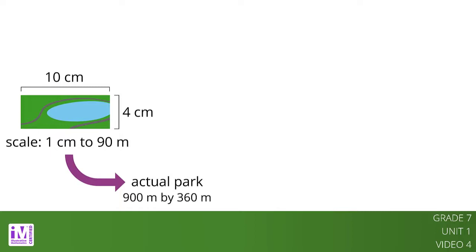For example, here is a scale drawing of a park where the scale is 1 centimeter to 90 meters. The drawing is 10 centimeters long by 4 centimeters wide. This means that the actual dimensions of the park are 900 meters by 360 meters because 10 times 90 equals 900 and 4 times 90 equals 360.